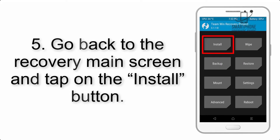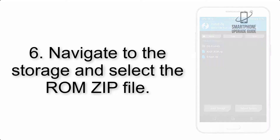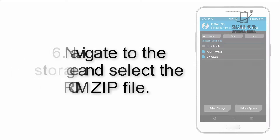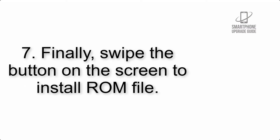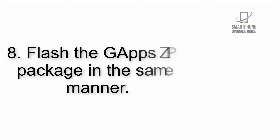Step 5: Go back to the recovery main screen and tap on the Install button. Step 6: Navigate to the storage and select the ROM zip file. Step 7: Finally, swipe the button on the screen to install the ROM file.